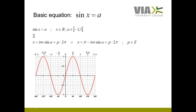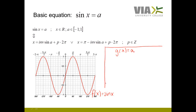What you see here is the graph for the periodic function f(x) equals sin x. If we include a graph for another function g(x), defined as equal to a certain number a, and let's say that number a is equal to 0.5, then the graph for that function will be this horizontal line here, which is equal to g(x) equals 0.5.